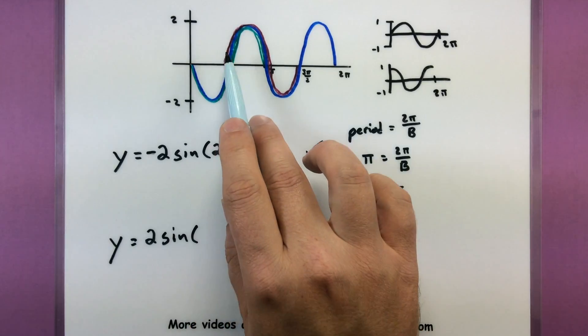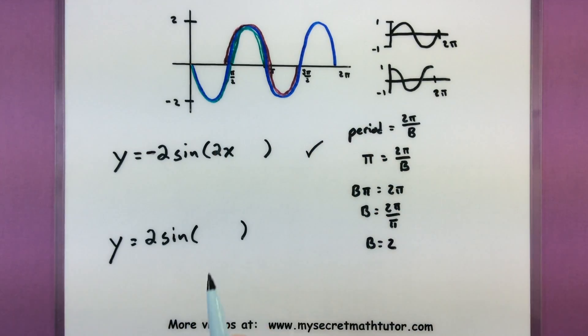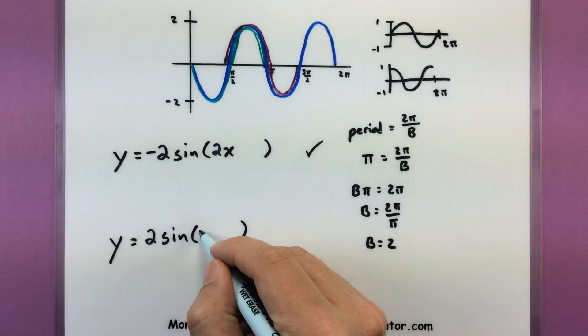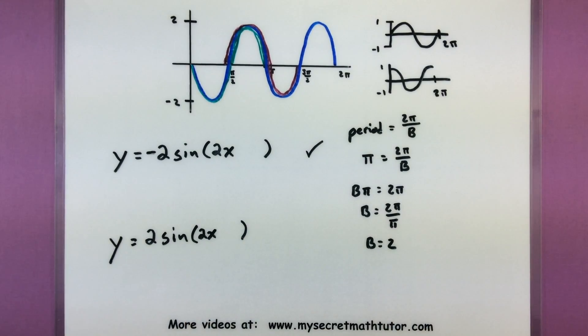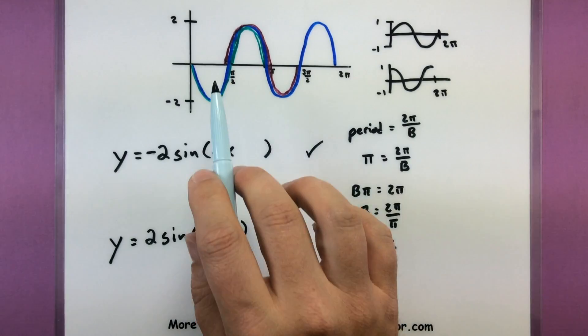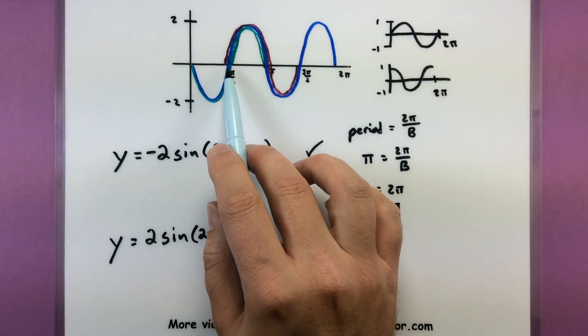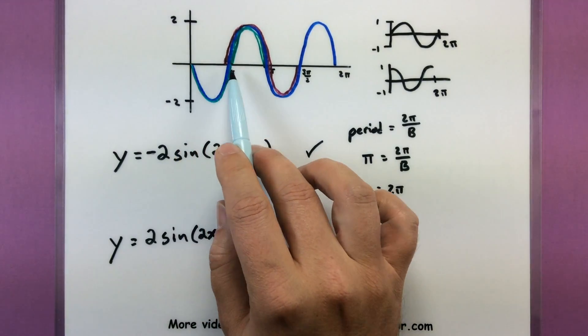The period. The period of this little portion is going to be just pi, the same as it was before. Which means if we were to solve it through and get our B value, B value would also be two. Now for our phase shift, this is different. I'm not starting at zero. I'm starting out a little ways.